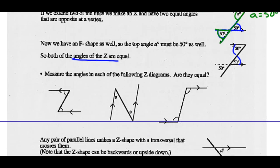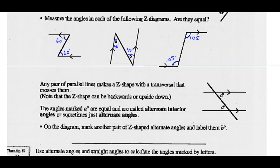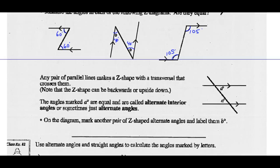Let's see if that's true in all cases. Measure the angles in each of the Z diagrams and see if they are equal. Use your protractor, measure them, then come back. What you should get is these Z angles — alternate interior angles — are both 60 for the first one, both 40 for the second one, and both 105 degrees for the third one. So any pair of parallel lines makes a Z shape with a transversal that crosses them.